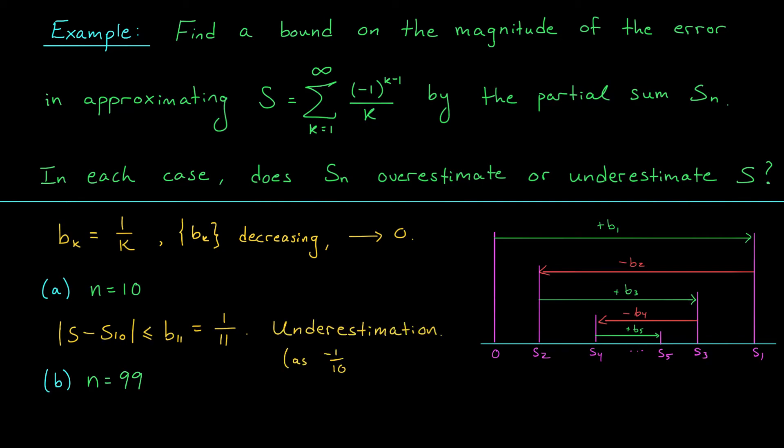Okay. Now, moving on to part B. We're approximating S using the sum of the first 99 terms of the series. According to the ASET, the error in this approximation is at most b100, which is 1 over 100. So what this is telling us is that we need to add up 99 terms of our series to ensure that our approximation is accurate to just two decimal places. This series converges very slowly.